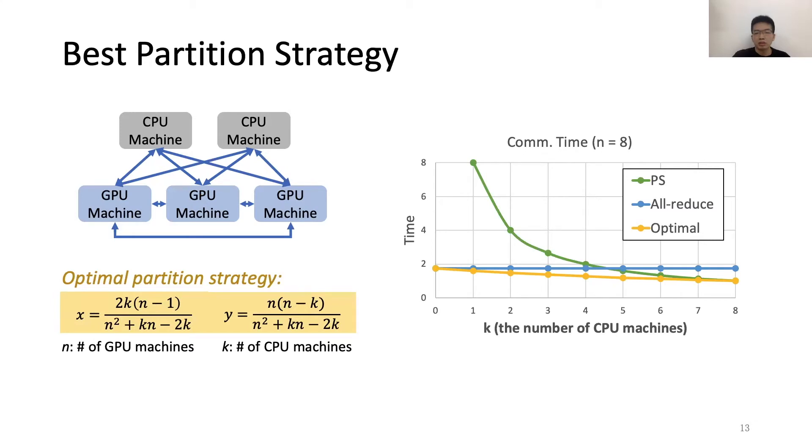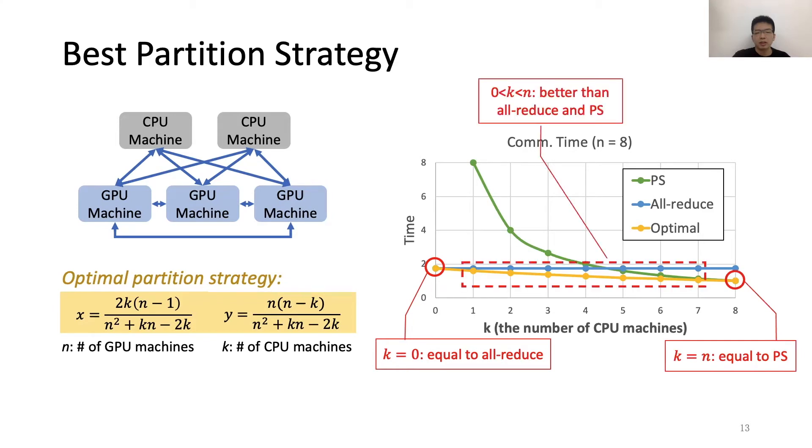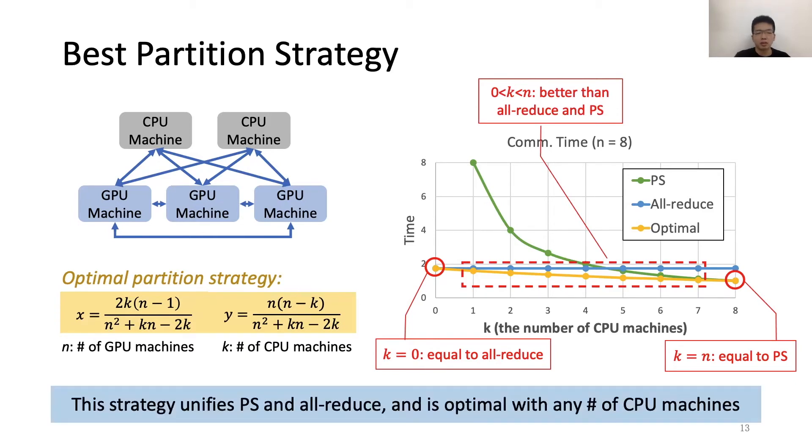And here, we use an example to show how it performs. This figure shows the communication time of three strategies, including PS, all-reduce, and the optimal one. And we have three findings. First, if k is 0, then the optimal value is equal to all-reduce. When k is n, the optimal time is equal to PS. And when k is between 0 and n, it is better than all-reduce and PS. So this strategy can unify PS and all-reduce and is optimal with any number of CPU machines.